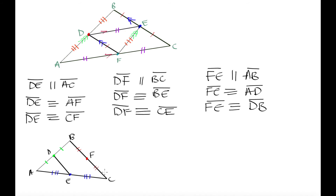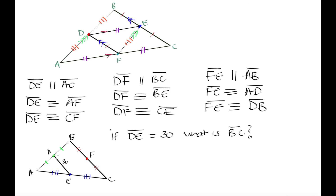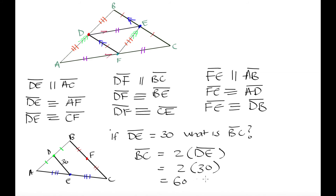For example, if DE equals 30, what is BC? Since DE is the mid-segment joining sides AB and AC, it is parallel to BC and half its length. That means BF equals 30 and FC equals 30, so BC equals 2 times DE, which is 2 times 30, giving BC equals 60.